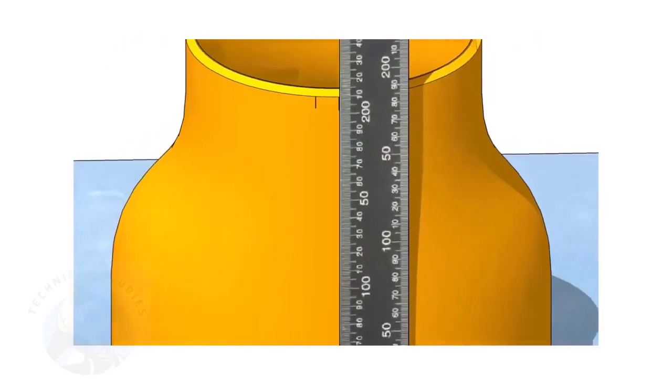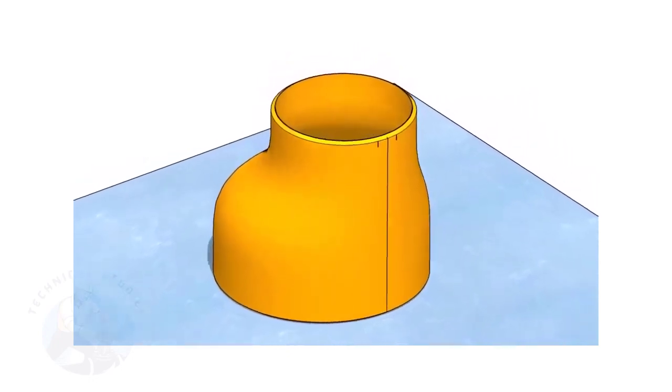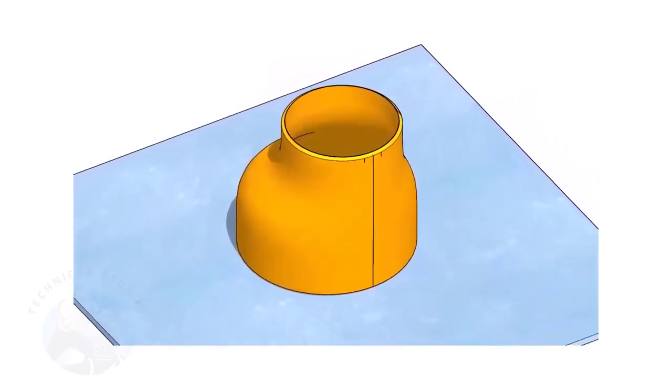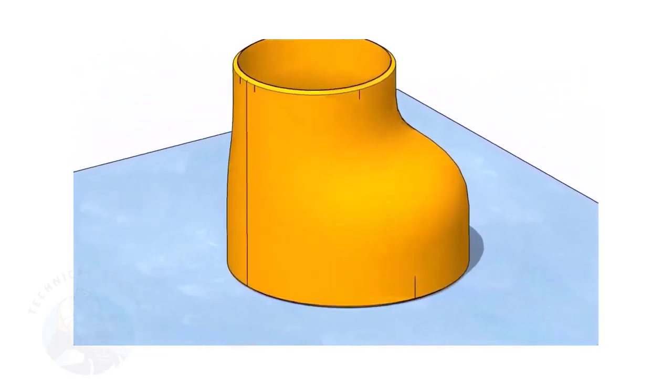In this video, I will show you the method of fitting an eccentric reducer to a pipe that is already fitted to a flange. But this method is applicable for all the fittings. Remember, the sequence of the fit up is more important.